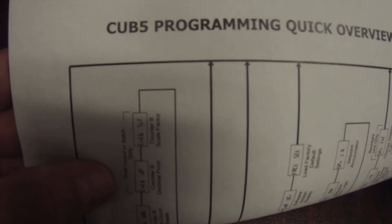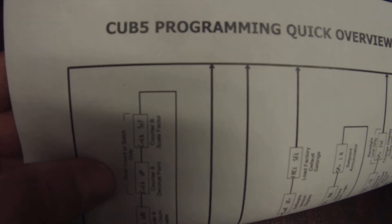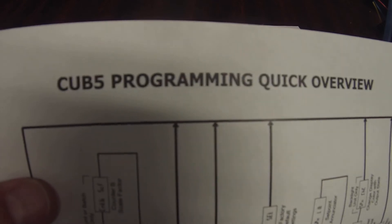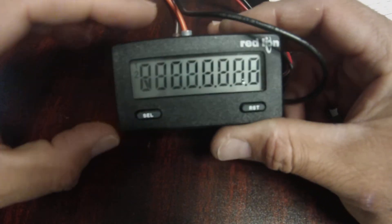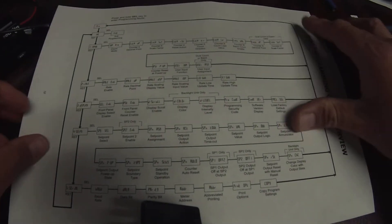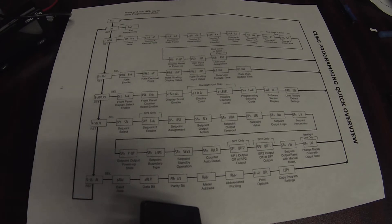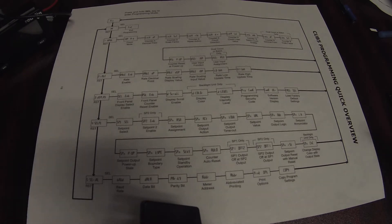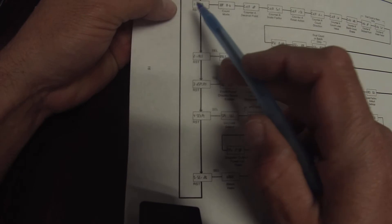This is a quick reference guide video to set the COP5 counter rate counter for depth indicators. We just need to set basically three settings to be able to count the depth. Those settings are going to be on input line one.